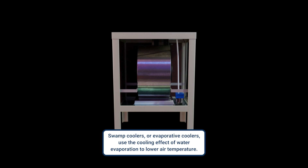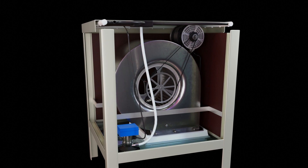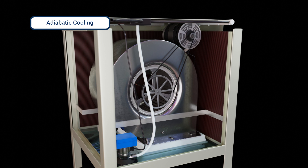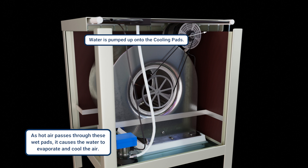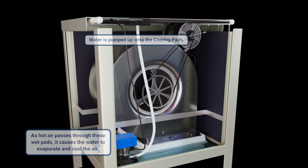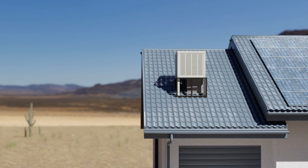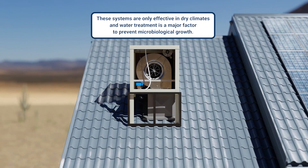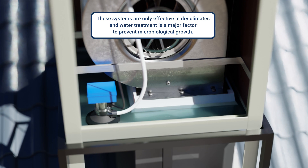Swamp coolers, or evaporative coolers, use the cooling effect of water evaporation to lower air temperature. This is known as adiabatic cooling. These systems are ideal for dry climates. They pass the air over water-saturated pads, cool it via evaporation, and then circulate it through the space. These systems are only effective in dry climates, and water treatment is a major factor to prevent microbiological growth.